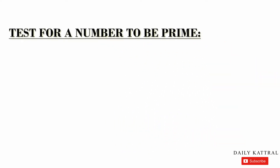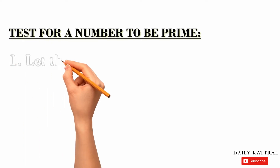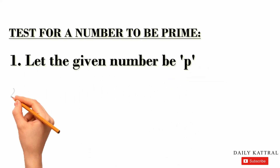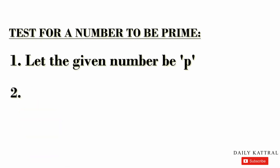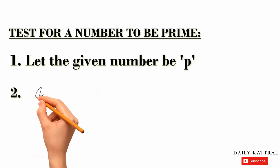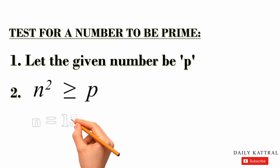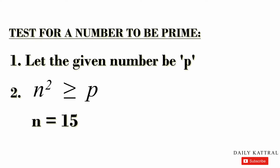First, what we have to do is consider the number P. Second step: what is the formula? N squared is greater than or equal to P. So if we have the number, we write the number P. For example, if N is 15, the number is equal to 15 squared. That is the second condition.